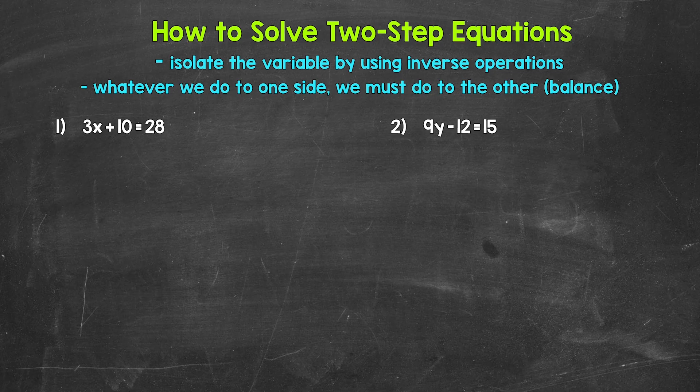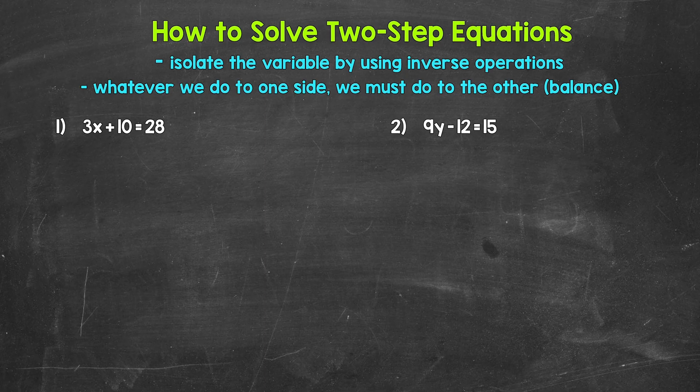When we solve two-step equations, we want to isolate the variable, just like when we solve one-step equations. So we want to get the variable by itself, and we do that by using inverse operations — opposite operations. Basically, we want to use inverse operations to undo the operations on the side of the equation with the variable, and this will isolate the variable. And remember, whatever we do to one side of the equation, we must do to the other. We have to keep everything balanced and equivalent. Let's jump into our examples and see what this looks like.